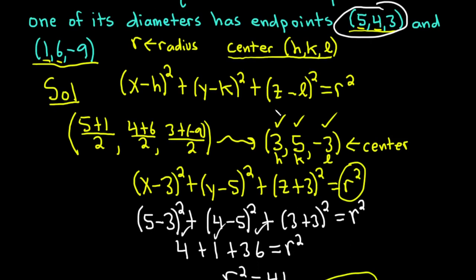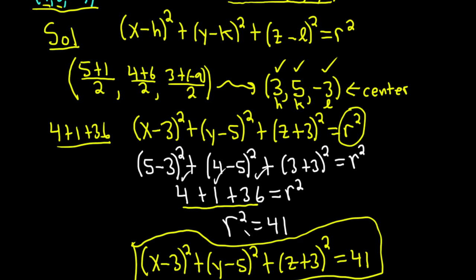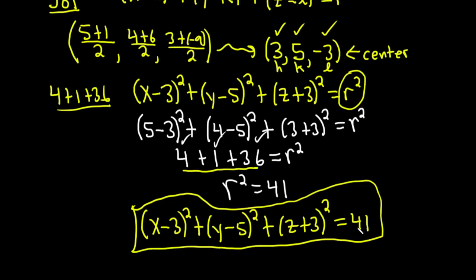We could have used the other point (1, 6, -9) instead — let's verify: plugging in x = 1 gives 1 - 3 = -2, (-2)² = 4. Plugging in y = 6 gives 6 - 5 = 1, 1² = 1. Plugging in z = -9 gives -9 + 3 = -6, (-6)² = 36. So 4 + 1 + 36 = 41, giving r² = 41 — exactly what we got with the first point. We plugged r² = 41 into the equation to get the final equation of the sphere.